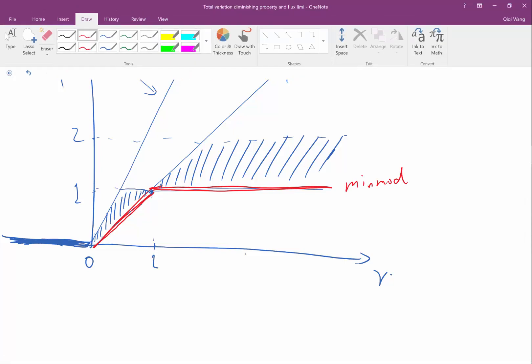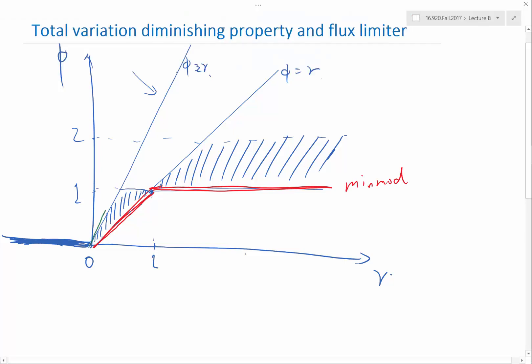And there is also this super B limiter that traces the upper boundary of this curve. And you will see how the solution would look different for these two. You can see that the super B is trying to construct as high slope as possible.